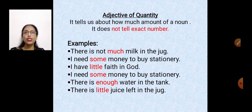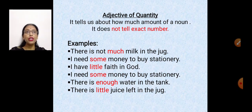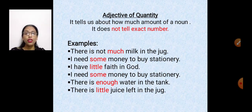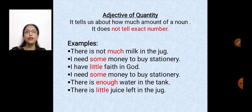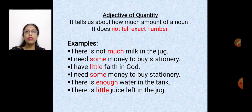What's next? Adjective of quantity. Listen very carefully — quantity tells about how much amount of a noun. It does not tell you the exact number. For example, 'there is not much milk in the jug' — I know it's less in quantity but I cannot tell exactly how much. 'I need some money' — some money could be 5 rupees for one person or 500 rupees for another. It varies person to person.